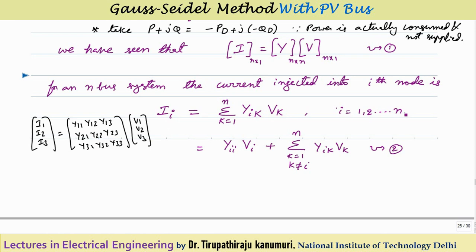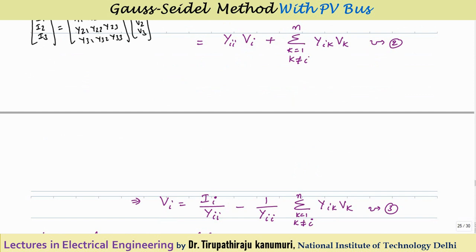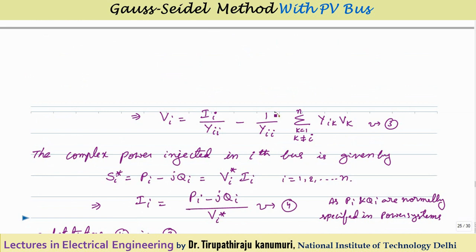This can be further simplified by separating the Yii·Vi term: II = Yii·Vi + Σ(k=1 to N, k≠i) Yik·Vk. From this, we can calculate Vi = (II/Yii) − (1/Yii)·Σ(k=1 to N, k≠i) Yik·Vk. We know the complex power injected into the ith bus can be written as S = P + jQ.